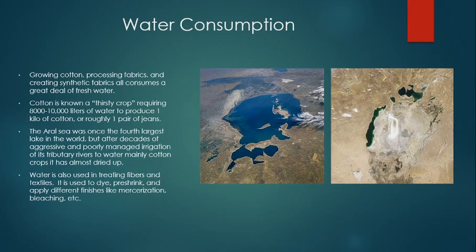Now let's talk about water consumption and the tragedy of the Aral Sea. Growing cotton, processing fabrics, and creating synthetic fabrics all consume a great deal of fresh water. Cotton is known as a thirsty crop, requiring 8,000 to 10,000 liters of water to produce roughly a kilo of cotton — about a pair of jeans. In very dry climates, it can skyrocket to almost double that amount. A case study in cotton and its water consumption can be seen in the Aral Sea.